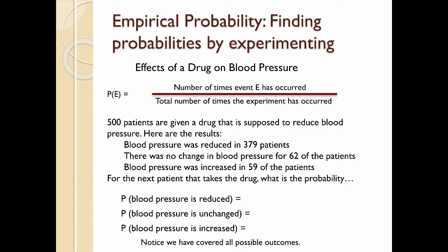So now another patient comes along and says, well, I'm not sure whether to take this drug, what's the probability that my blood pressure will be reduced? Well, if we base our answer on this experiment that we've just done, we would say that 379 out of 500, we're converting that to a percentage, 75.8 percent probability of getting your blood pressure reduced. Do the same type of calculation for your blood pressure being unchanged and for your blood pressure being increased.